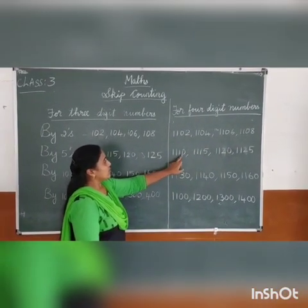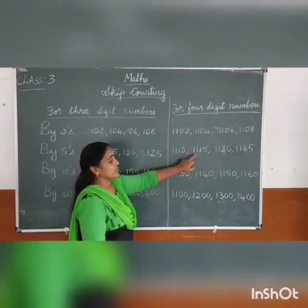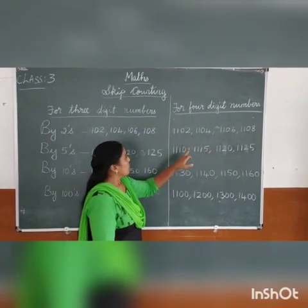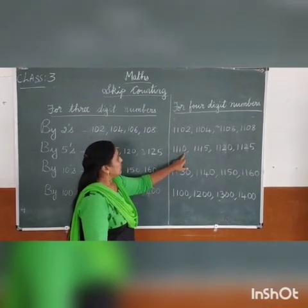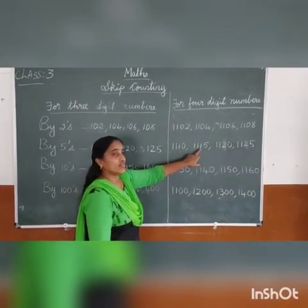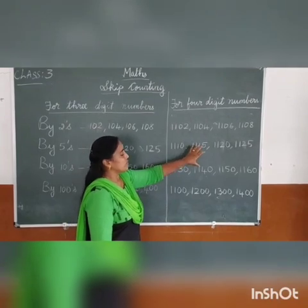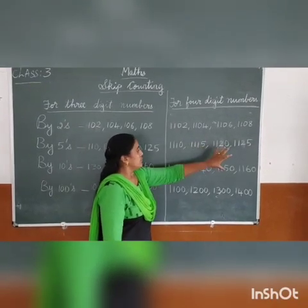Next one, by 5s, for 4-digit numbers. 1,105 — 1,110 — 1,115.